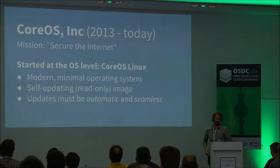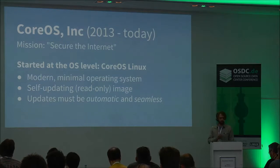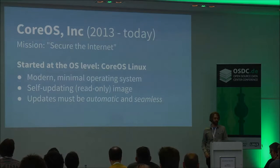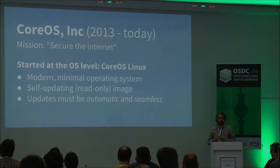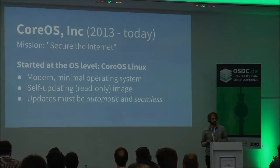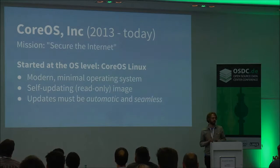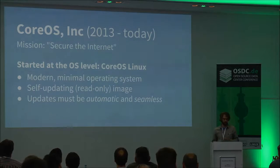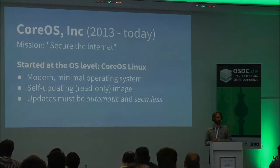CoreOS started about two years ago. It's a company, but fundamentally it's a bunch of open source software. The mission of the company is to secure the internet, which is a grandiose mission. The main idea is that software is always going to be insecure — there are always going to be vulnerabilities. The best way to deal with that sensibly is to make sure that updating is as seamless as possible. So we started at the operating system level with an open source Linux distribution, CoreOS Linux, which is a self-updating operating system.